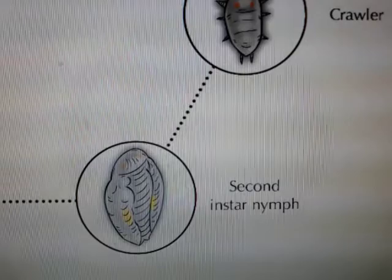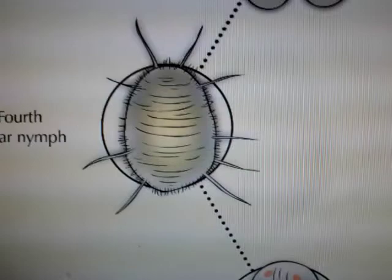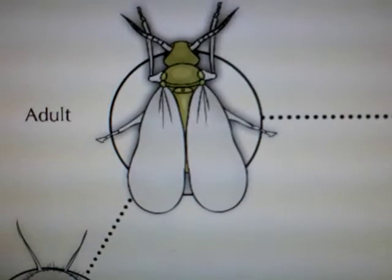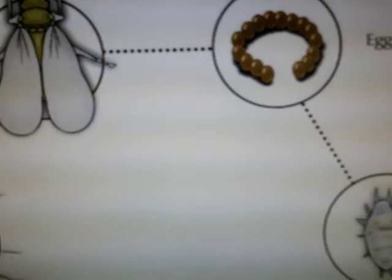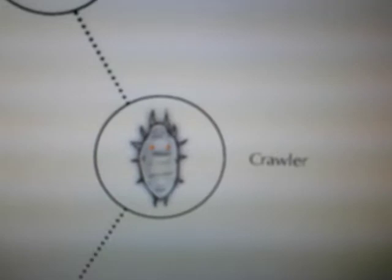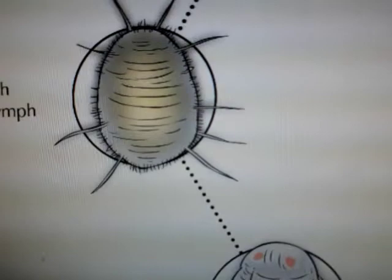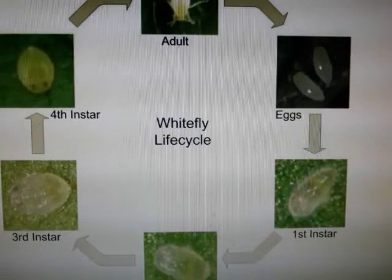The life cycle progresses through second instar nymph, third instar nymph, fourth instar nymph, and then adult. The first nymph stage is called crawlers and the last is referred to as pupa. This completes the life cycle of the whitefly. So these are two important pests with different types of life cycles: first, aphids, and second, whitefly.